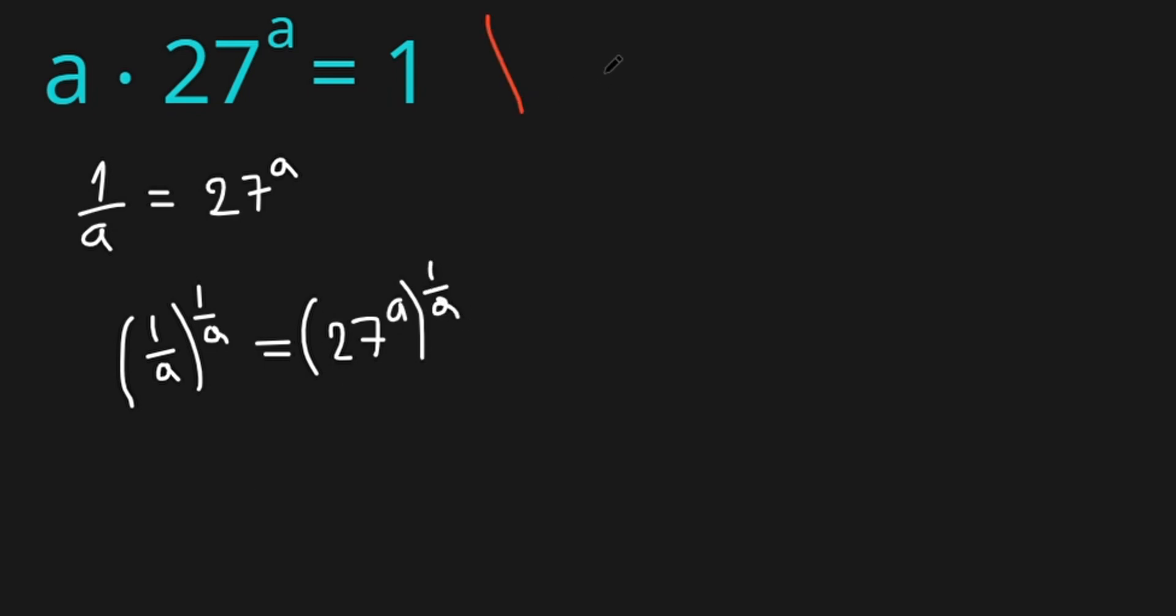Now we need to know this formula: a to the power of b all this to the power of c is equal to a to the power of b times c.